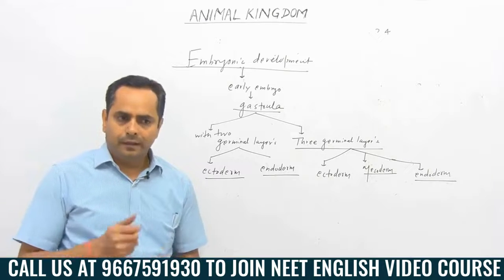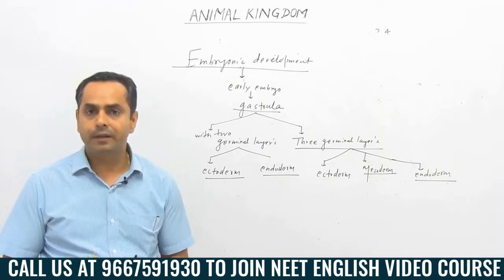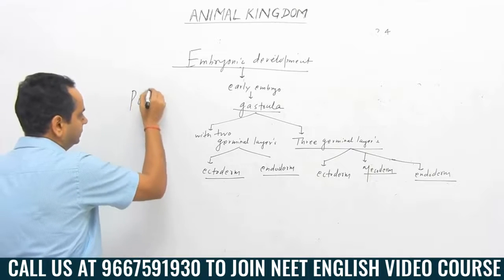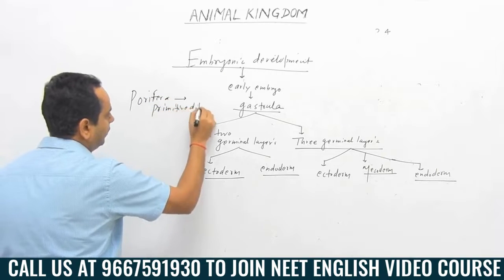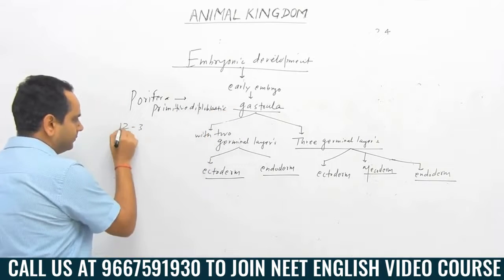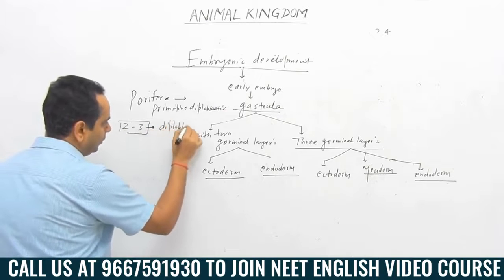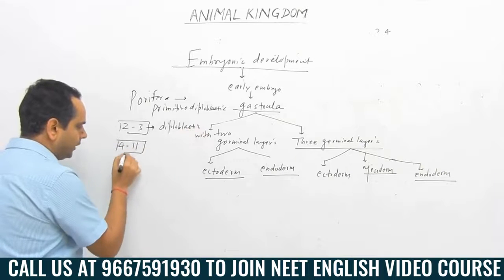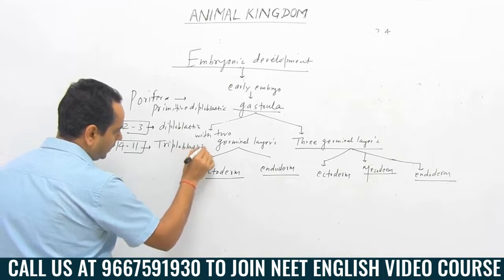By the classification system, poriferans can be considered as primitive diploblastic. Phylum number one — porifera — can be considered as a primitive diploblastic animal. The second and third phyla are considered as true diploblastic animals, and from phylum 4 to 11, they are all considered as true triploblastic animals.